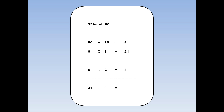Finally, we add 30% and 5% together. 30% was 24 and 5% was 4. 24 plus 4 is 28.